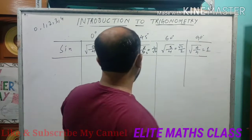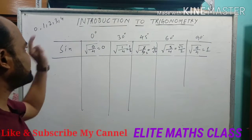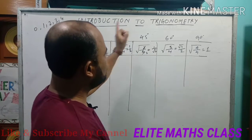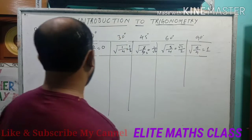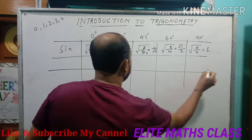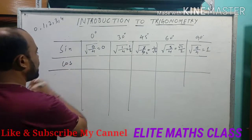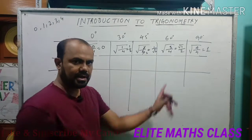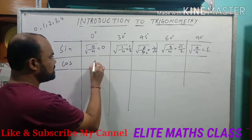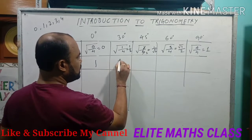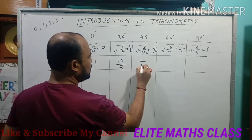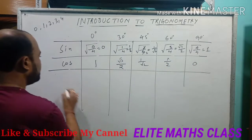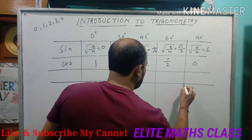So we have got the values of sin: sin 0° = 0, sin 30° = 1/2, sin 45° = 1/√2, sin 60° = √3/2, and sin 90° = 1. Now the second ratio is cos. Here, you just write the values in reverse order: cos 0° = 1, cos 30° = √3/2, cos 45° = 1/√2, cos 60° = 1/2, and cos 90° = 0. That's all the values of cos.